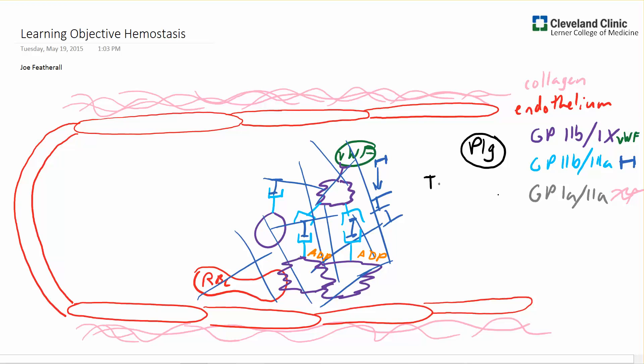Tissue plasminogen activator or urinary type plasminogen activator acts on plasminogen, cleaves it to form the active form which is called plasmin.